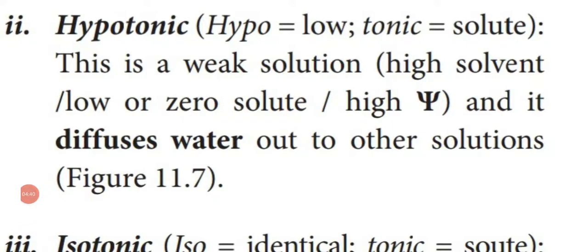This strong solution attracts solvent from other solutions. Next is hypotonic solution. 'Hypo' means low, 'tonic' means solute, so the solute here is low concentration — a weak solution. In hypotonic solution the solvent is high, solute is low or zero, so water potential is also high. This weak solution diffuses water outside to the other solution. That is the meaning of hypotonic solution — it diffuses water outside.